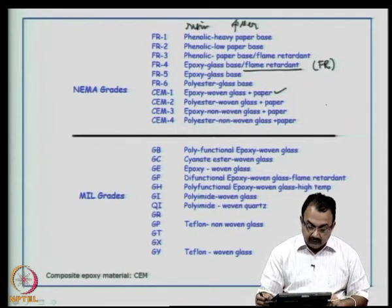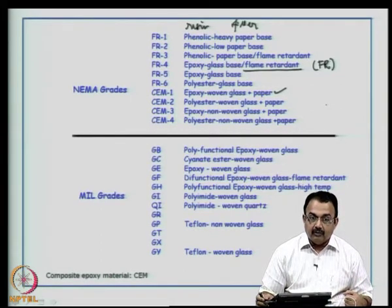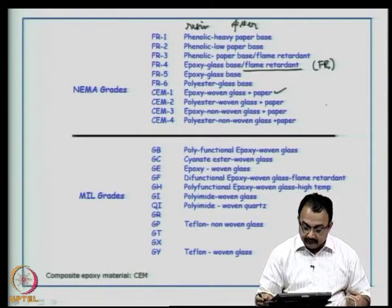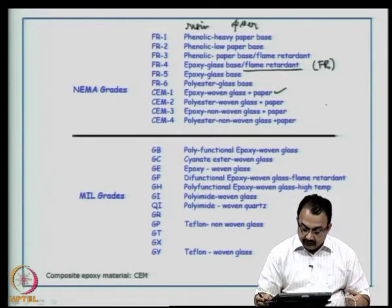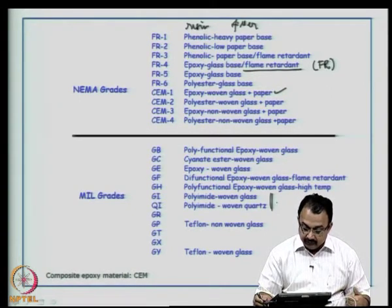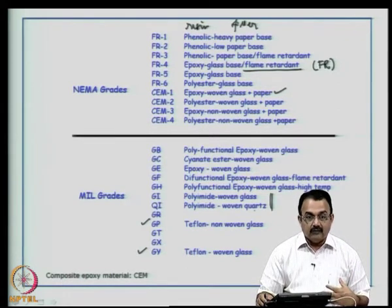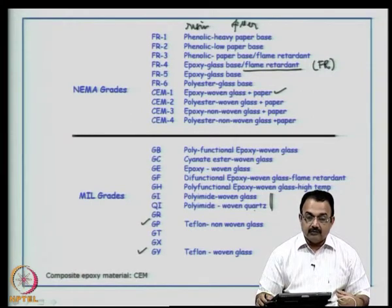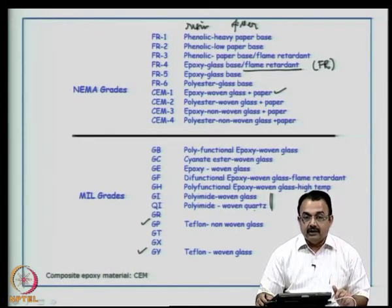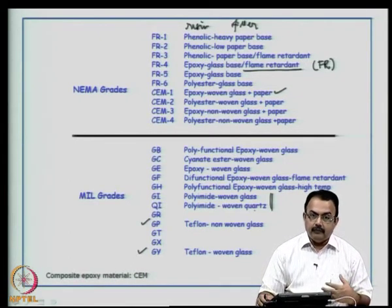In certain cases, people follow mill grades for copper clad laminates. GB is polyfunctional epoxy with woven glass. In the polyamide category, you have GI (polyamide with woven glass) and QI (polyamide with woven quartz). For Teflon, you have GP and GI. Cost variations always exist — not all grades are economical. Some are expensive because they target specific applications such as high frequency or space applications. Very common consumer electronics typically use the most economical FR4.